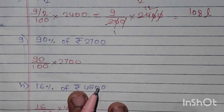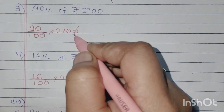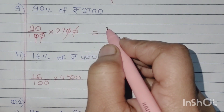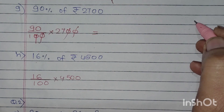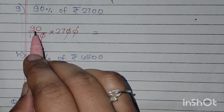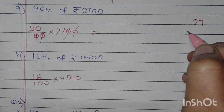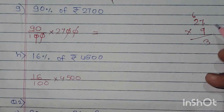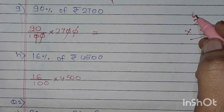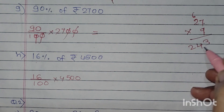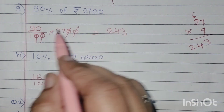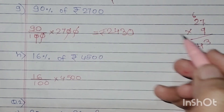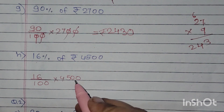90% of 2700: zeros get cancelled. 90 को मैं directly नहीं लूँगी, तो 27 into 9 करूँगी। 9 into 7 is 63, 6 carry — 9 into 2 is 18, 18 plus 6 is 24, तो यह 243, और एक 0 जो हमने नहीं लिया वो यहाँ लगा देना है, तो यह हो जाएगा 2430 rupees. Next, 16% — zeros get cancelled and 16 into 45 is 720 rupees.